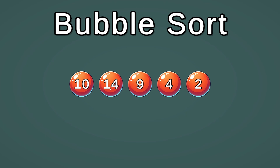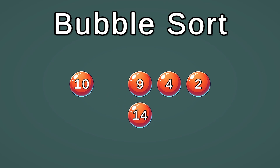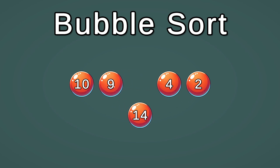Then we compare with the next element. 14 compared to 9 is not in the correct order, so we store 14 in a temporary location and put 9 in its place.